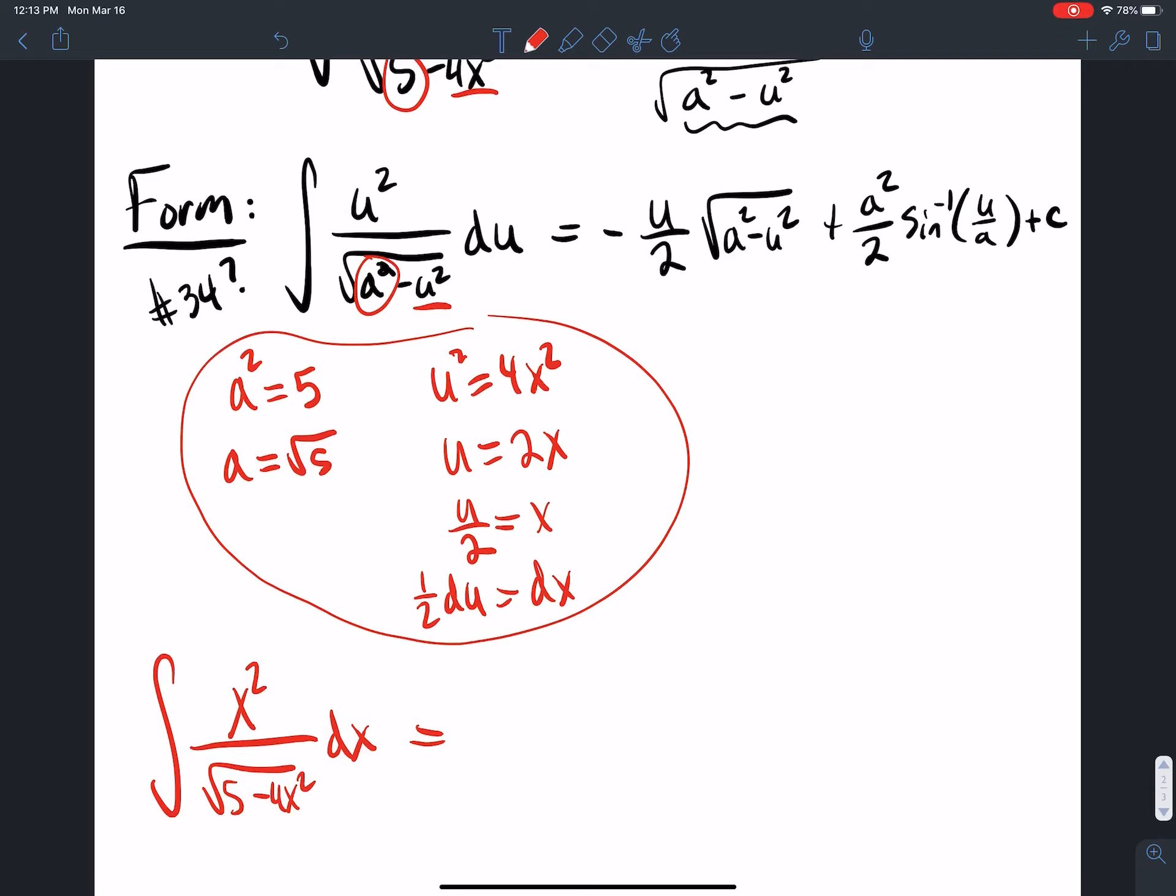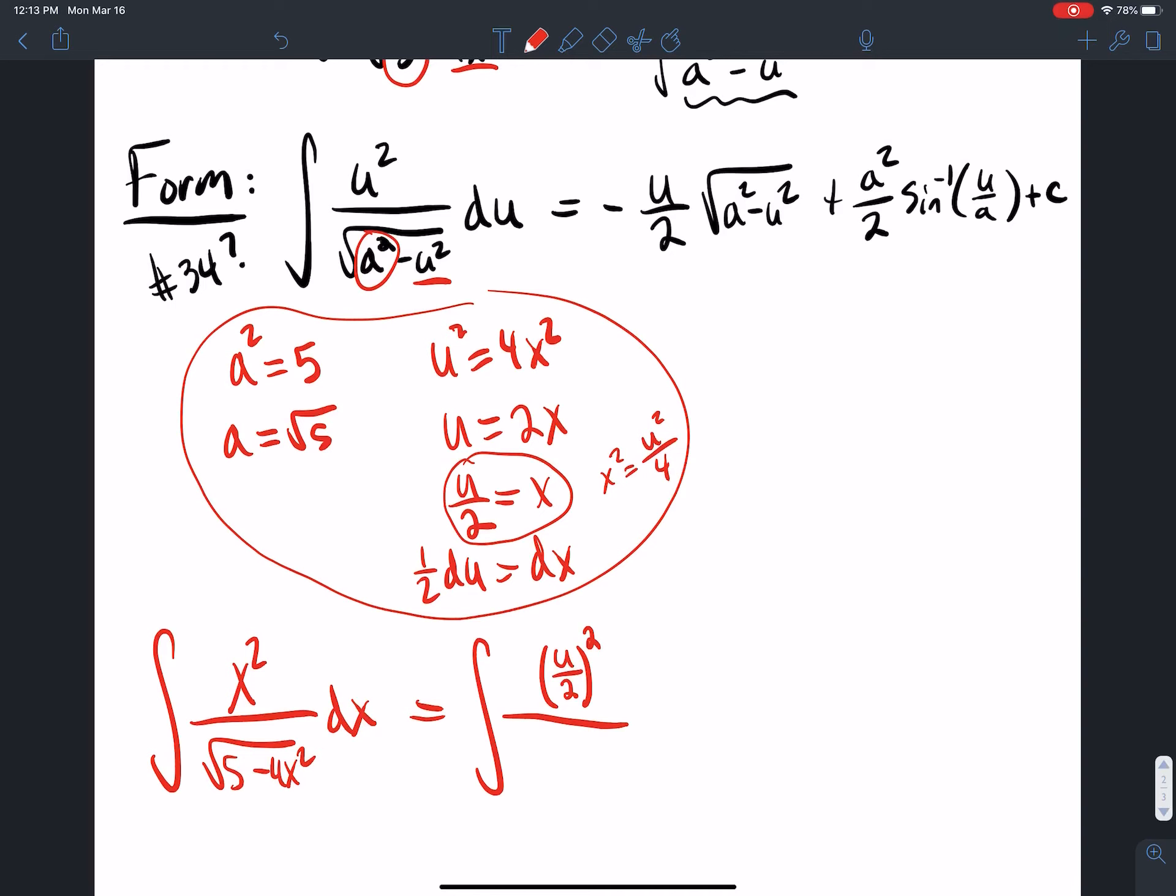What do I have? Well, x is equal to u over 2. So x squared is equal to u squared over 4. So I'm going to do u over 2 all squared. And then I have square root 5 minus u squared. So let's do some algebra. dx is 1 half du. So that's 1 half du.